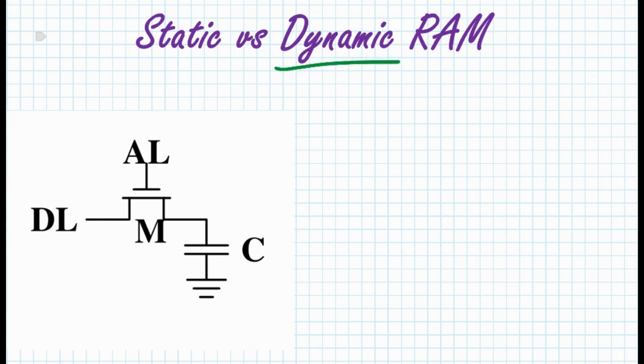On the other hand, this is the typical dynamic RAM implementation. It is implemented with a single transistor and a single capacitor. The presence of electricity in the capacitor is going to determine whether it is zero or one.